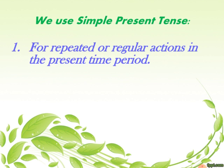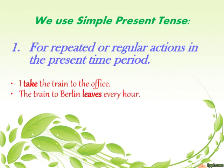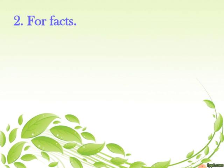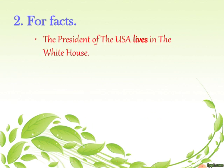We use simple present tense for repeated or regular action in present time. For example: I take the train to the office — this is a repeated action that you do every day. The train to Berlin leaves every hour. John sleeps eight hours every night. These are all repeated actions, for which we use simple present tense.